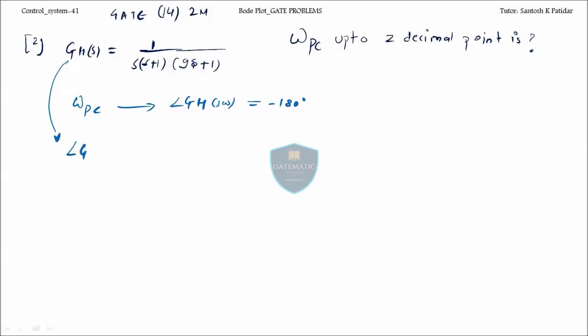Let us find out the phase. G H of omega is minus 90 minus tan inverse omega minus tan inverse 9 omega. You will equate to minus 180 degree. So this will come to this side, this will be 90, tan inverse everything will become plus omega plus tan inverse 9 omega.